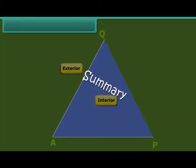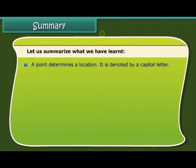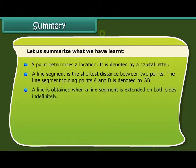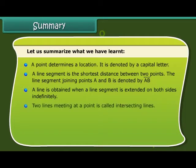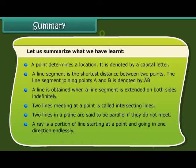Summary: Let us summarize what we have learnt. A point determines a location. It is denoted by a capital letter. A line segment is the shortest distance between two points. The line segment joining points A and B is denoted by AB. A line is obtained when a line segment is extended on both sides indefinitely. Two lines meeting at a point are called intersecting lines. Two lines in a plane are said to be parallel if they do not meet. A ray is a portion of a line starting at a point and going in one direction endlessly. Two rays starting from a common point form an angle.